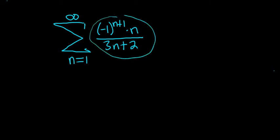The n-th term test says if you take the limit of a sub n as n approaches infinity, and it's not equal to 0, then we say the series diverges.